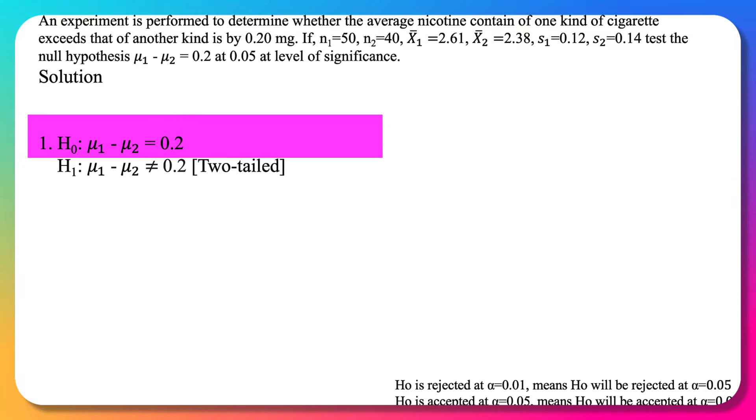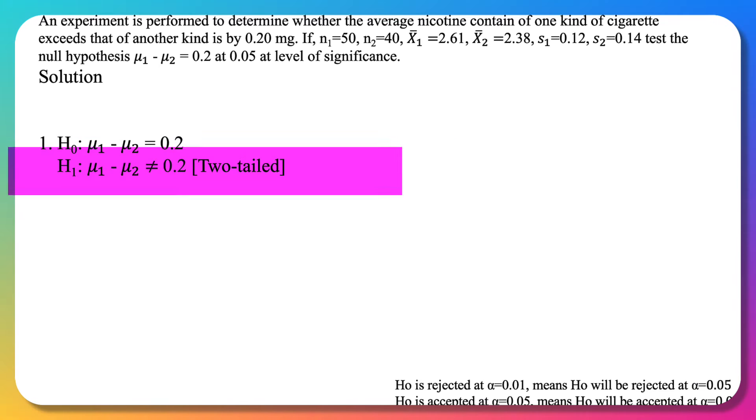The null hypothesis is H0: μ1 - μ2 = 0.2. For the alternative hypothesis, since no specific direction is mentioned—we only know one kind exceeds the other—we use a two-tailed test. So H1: μ1 - μ2 ≠ 0.2. The level of significance alpha is 0.05.